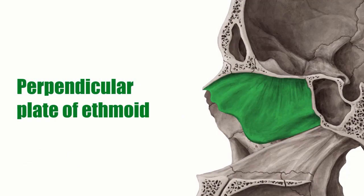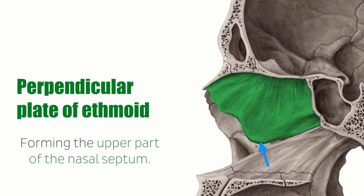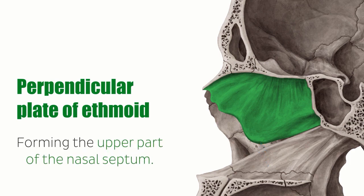The perpendicular plate of the ethmoid bone is a thin lamina which runs horizontally from the cribriform plate. Inferiorly, it attaches to the septal cartilage of the nose, thus forming the upper part of the nasal septum.